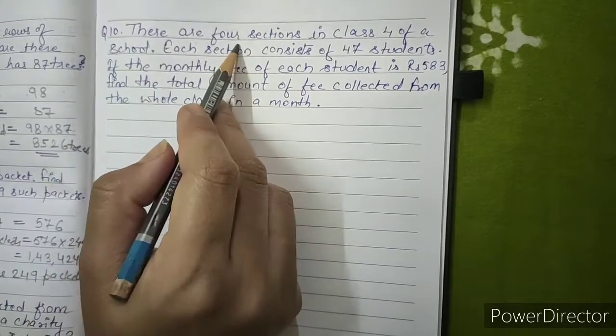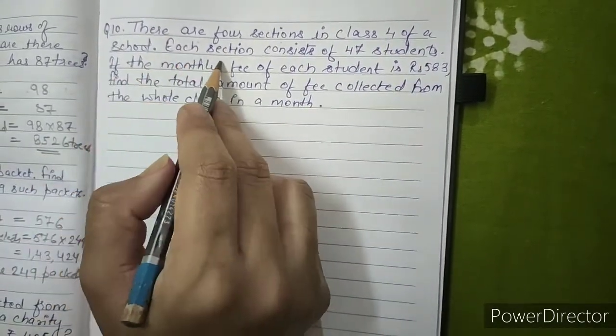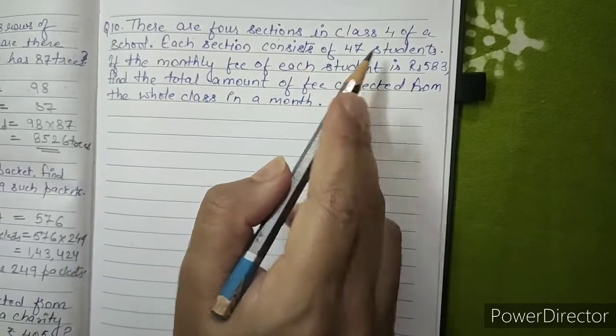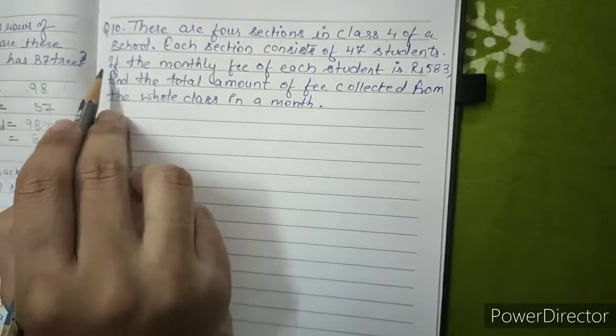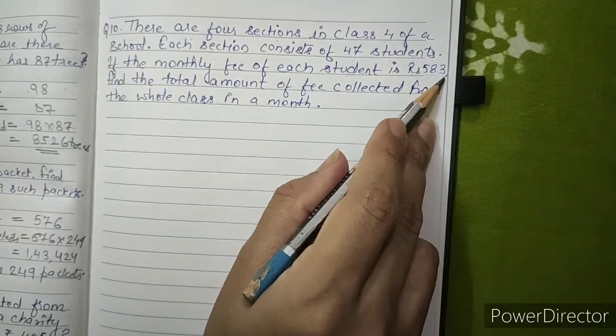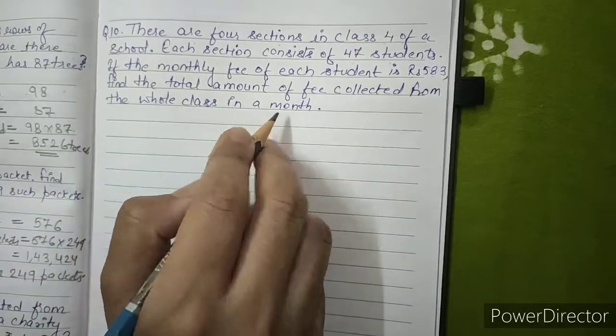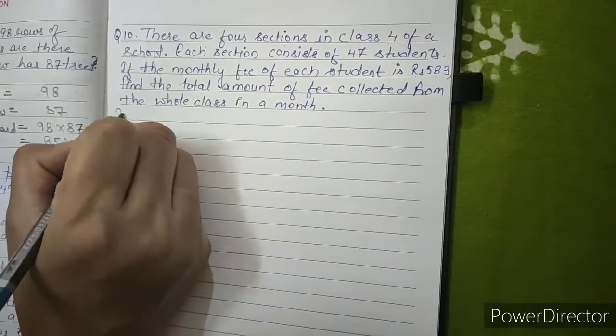Question number 10: There are four sections in Class 4 of a school. Each section consists of 47 students. If the monthly fee of each student is Rs. 583, find the total amount of fee collected from the whole class in a month.